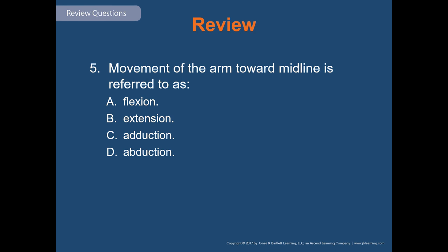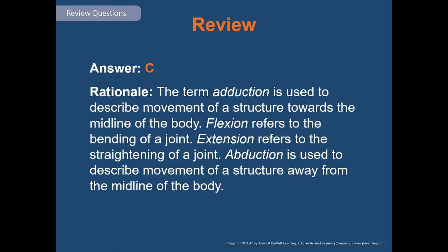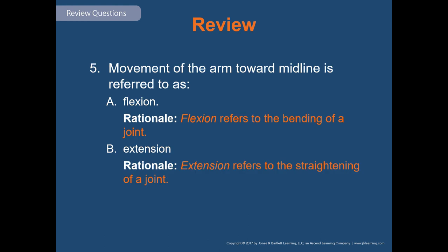Question five: movement of the arm toward the midline is referred to as flexion, extension, adduction, or abduction? The answer is C, adduction. Flexion is bending of a joint, extension is straightening of a joint, abduction is moving away from the midline, and adduction is moving toward the midline.